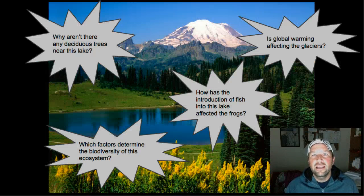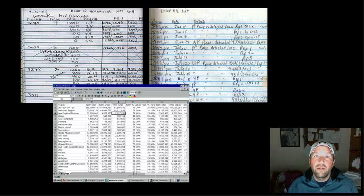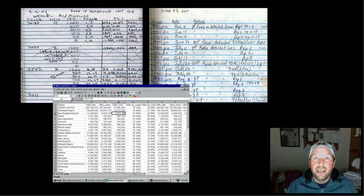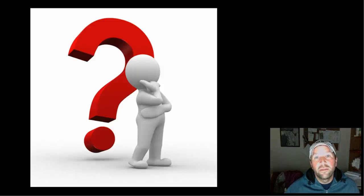Now, scientists ask questions about the natural world. So if we were looking at this picture here, we might ask questions like, how has the introduction of fish affected the frog populations in this lake, or what factors determined the biodiversity of this ecosystem? Then we'd go out and we would collect some data. So here's a field notebook with a bunch of data, and then we might enter that data into a spreadsheet. Now that's an important part of the process, but now we have to look at that data and figure out what it means. It doesn't really tell us anything by itself.